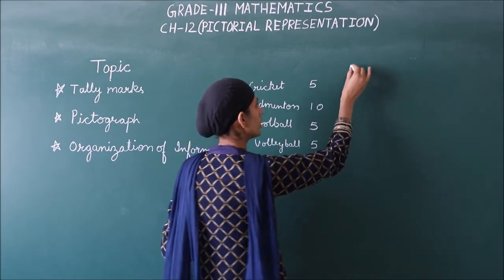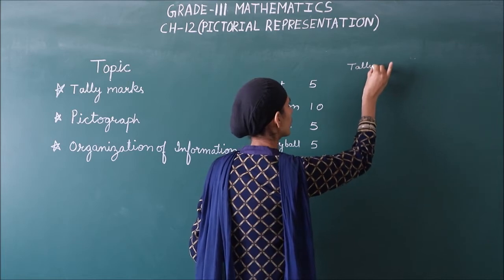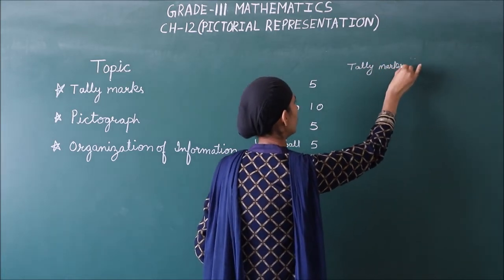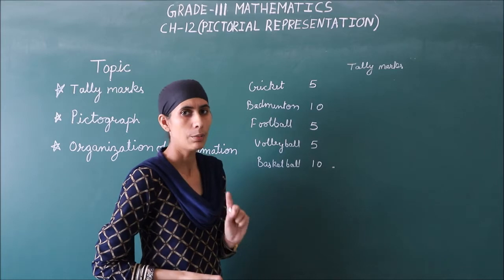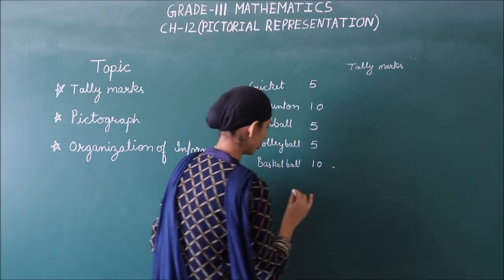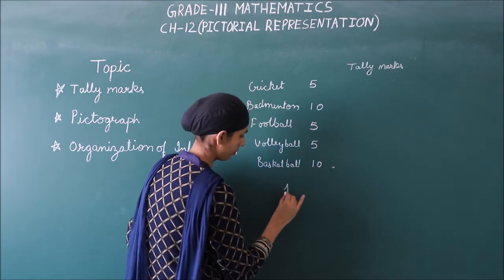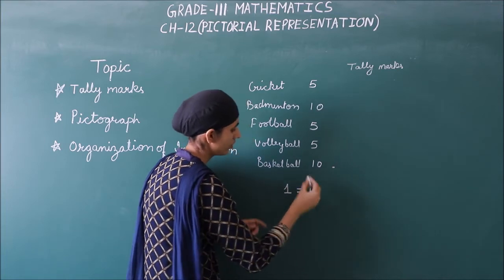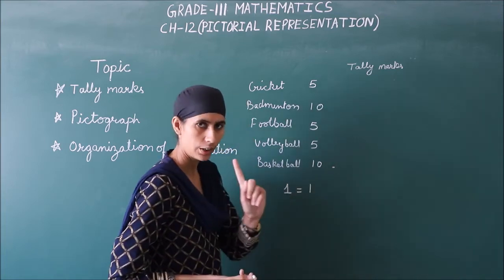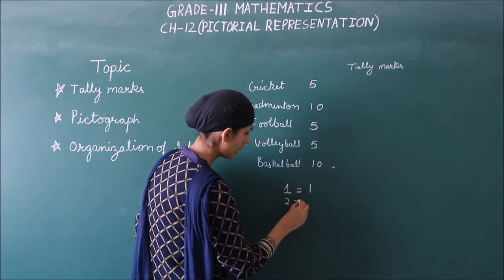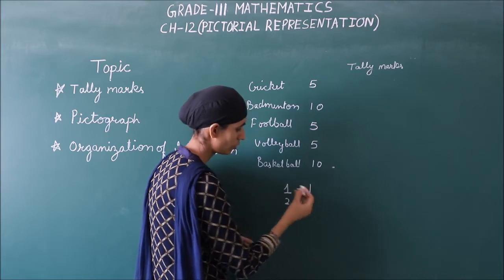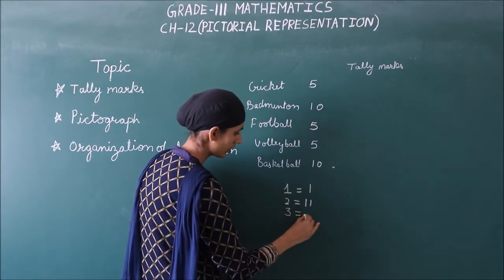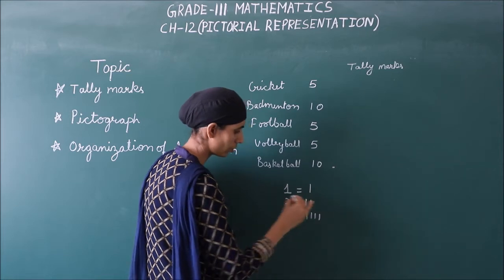How do we represent this in tally marks? Tally marks means we represent numbers using lines. If I write 1, that is simply 1 line. For 2, we make 2 simple lines. For 3, we draw 3 lines. For 4, we draw 4 lines.